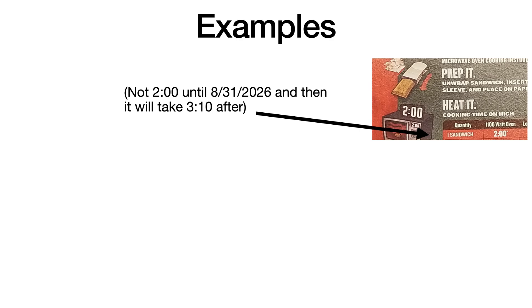Notice how the instructions here says the cooking time is two minutes for one sandwich, not two minutes until August 31st, 2026, and then it'll take three minutes and ten seconds after. It doesn't take longer in the microwave tomorrow, nor does it magically turn into something different.